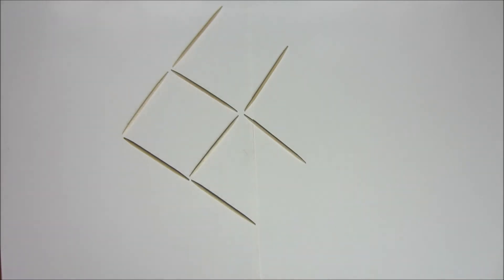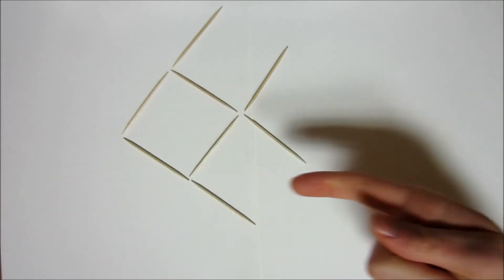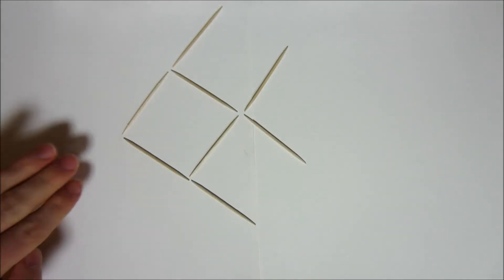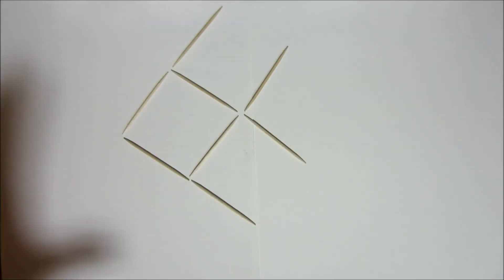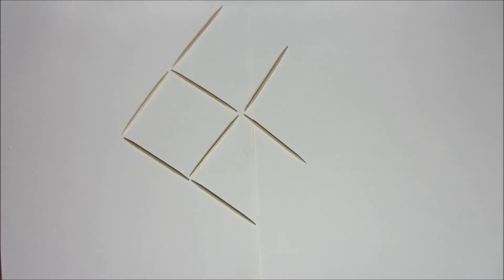So that the fish swims to the right. You can see it's currently facing this way, so it's swimming to the left. So you have to move three toothpicks somewhere so that it swims to the right, so it looks the same just pointed to the right. Give this puzzle a try.